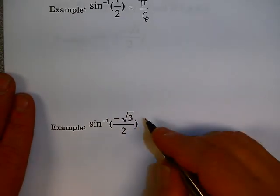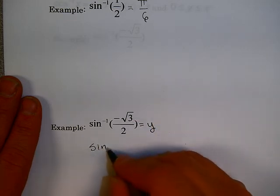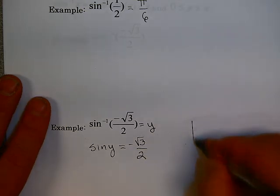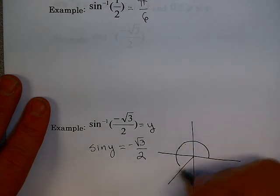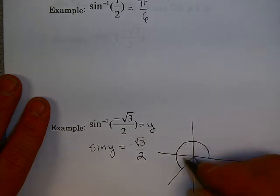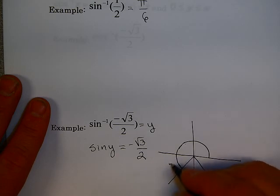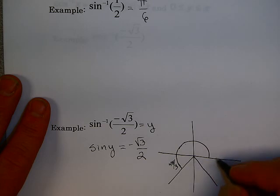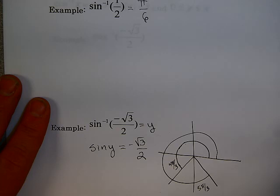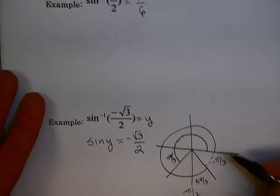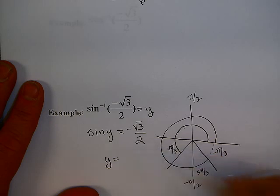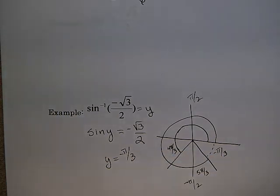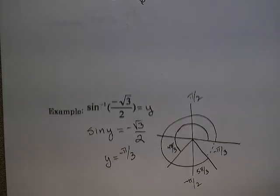Now let's look at inverse sine of negative square root of 3 over 2. That tells me sine of y equals minus √3/2. Sine equals minus √3/2 in two places: at 4π/3 (quadrant 3) and at 5π/3, or equivalently minus π/3 (quadrant 4). I want the one between −π/2 and π/2, which is minus π/3. It's important to recognize that sine is not 1-to-1, and in order to make it 1-to-1, we had to restrict the domain.